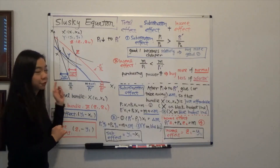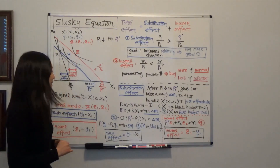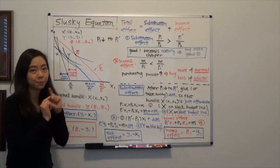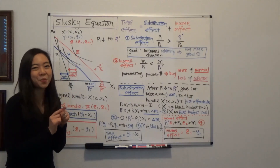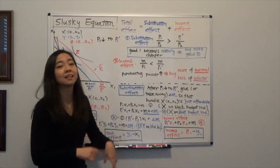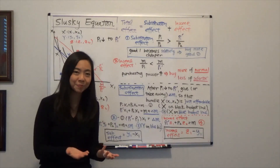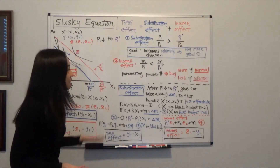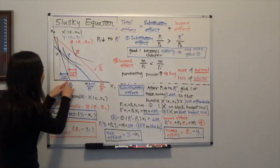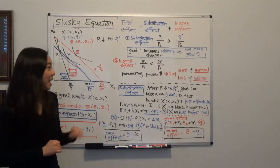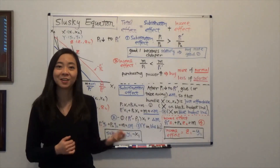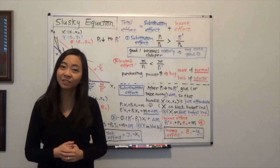Notice that for good one, this good is actually a normal good because the income effect is positive. When the price goes down, your purchasing power has gone up, and because this is a normal good you end up buying more of it. I hope this helps and I hope you enjoy learning the Slotsky equation. We'll see you next time.